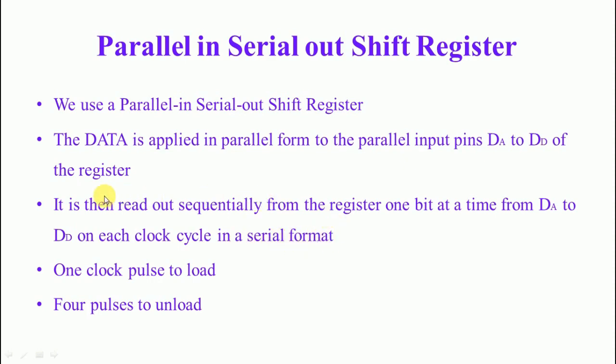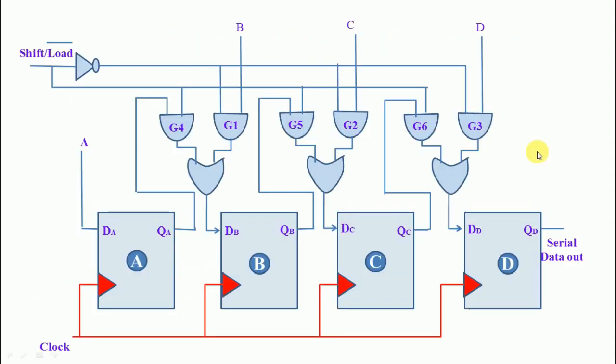On each clock pulse, the parallel loaded data is shifted out one bit at a time. One clock pulse is enough to load all 4 bits of data in parallel, but 4 clock pulses are needed to unload all 4 bits serially.